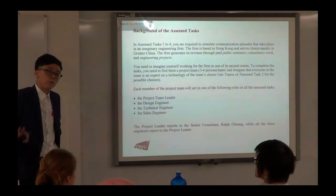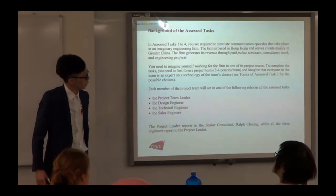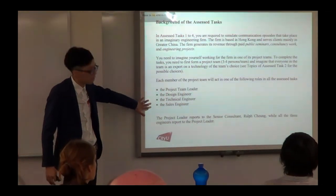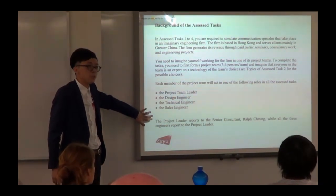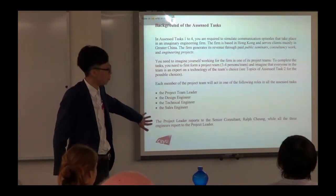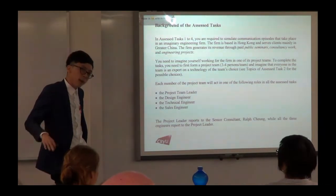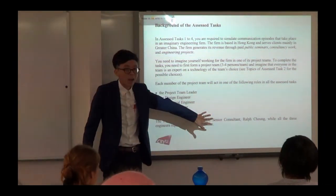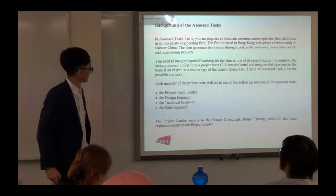Usually we'll be grouping four students in a group. One of them will be the project team leader, and then we have a design engineer, a technical engineer, and a sales engineer. We did not make this up — if you Google them, they exist. These are actual job titles out there. And apart from that, we have an imaginary person, Ralph Jai, who is the supervisor of the engineering project.